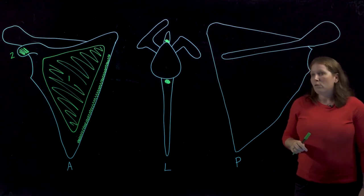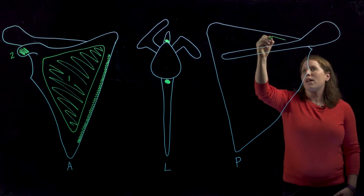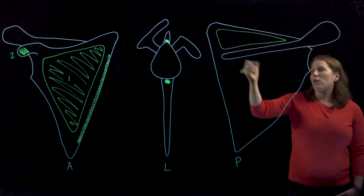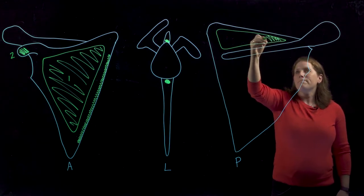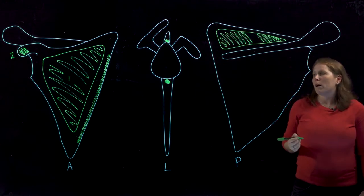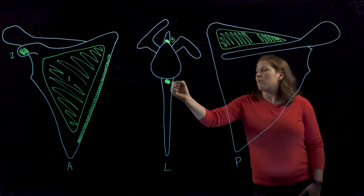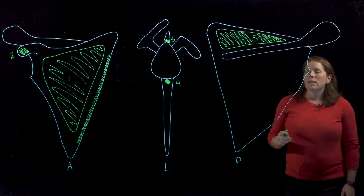Now let's look at this posterior view and we'll identify again the large flat surfaces. So on the posterior surface we have this large flat surface above the spine for the muscle that we call supraspinatus.